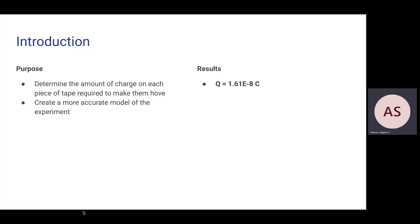The first purpose of this lab was to determine the amount of charge on each piece of tape required to make them hover above each other. The second purpose was to create a more accurate model of the experiment than the model made in Lab 1. As a result, I determined that the charge on a single piece of tape was 1.61 × 10^-8 Coulombs.